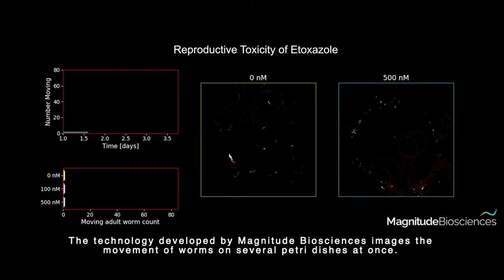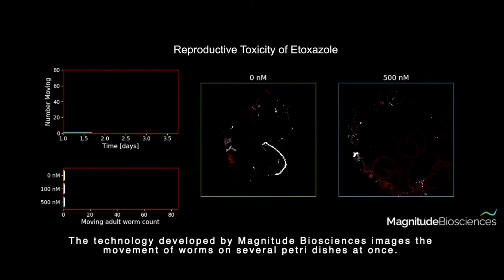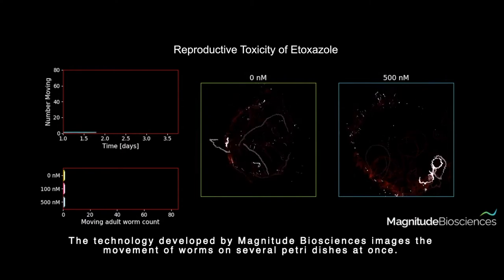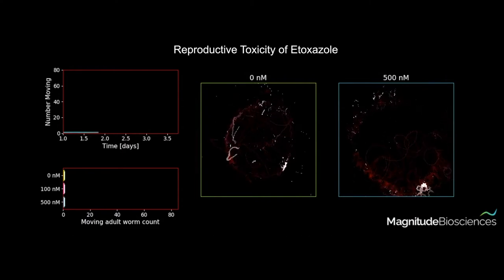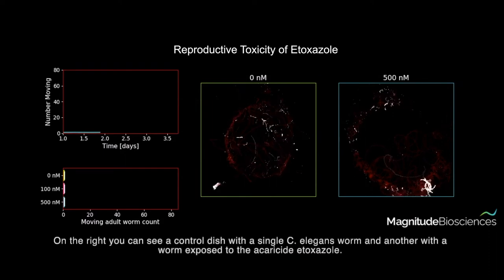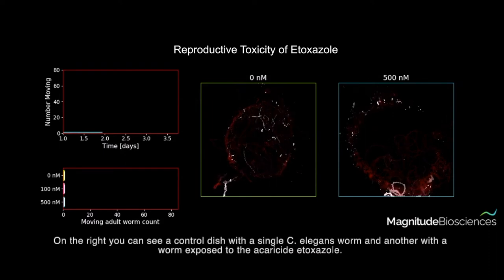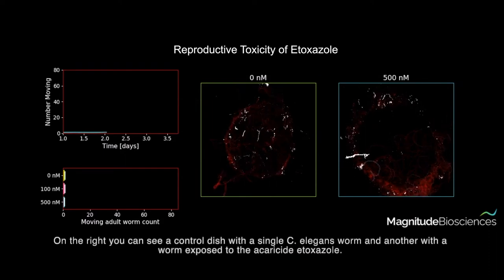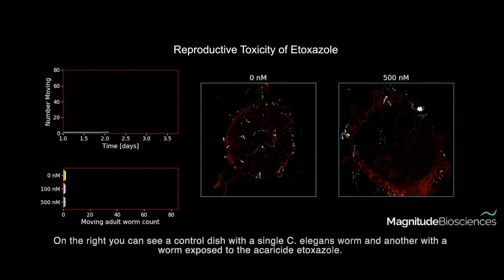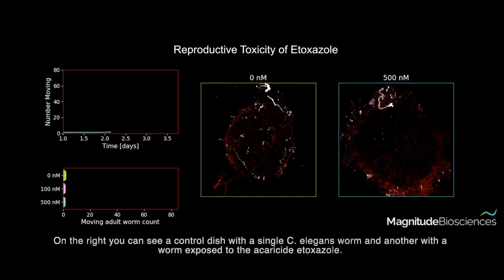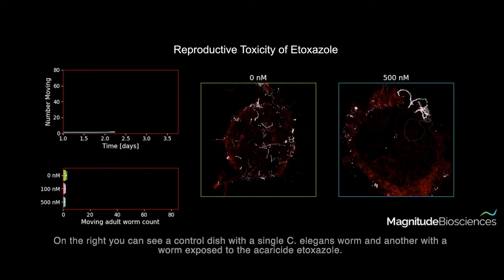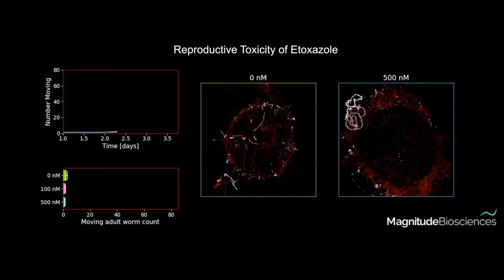The technology developed by Magnitude Biosciences images the movement of worms on several petri dishes at once. On the right, you can see a control dish with a single C. elegans worm, and another with a worm exposed to the acaricide etoxazole.